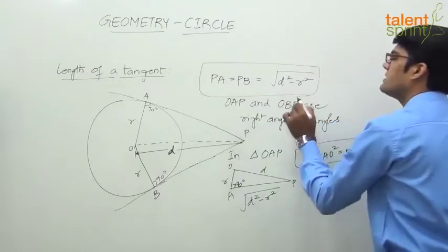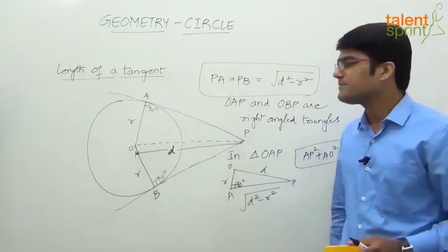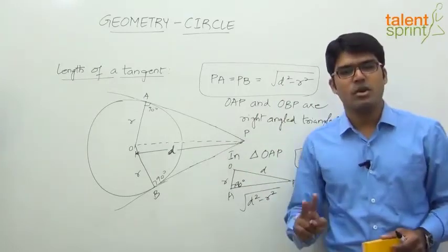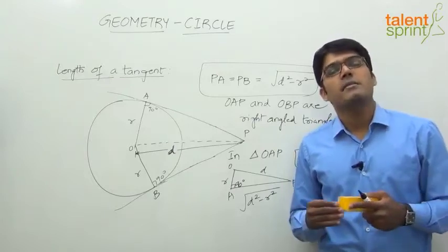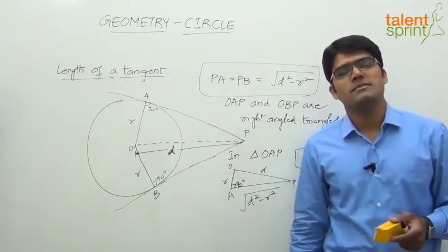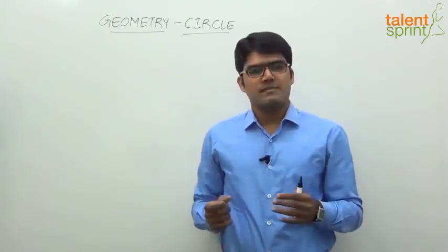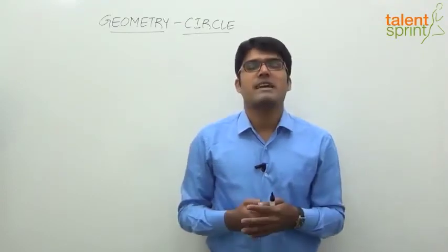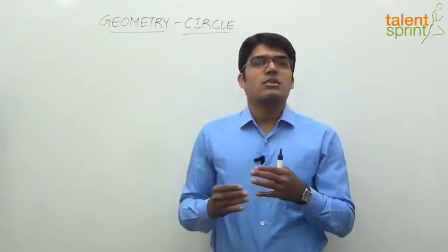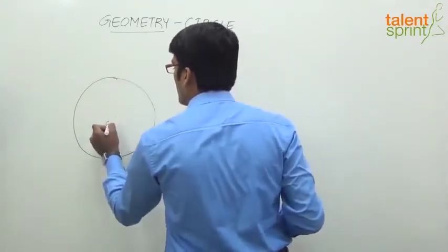This is how we can always measure the length of a tangent when you know the distance from the center to the external point. So two important properties discussed so far: one, the angle made by the radius at the point of contact with the tangent is 90 degrees; second, the length of the tangent. Let us now quickly discuss a few more properties — direct common tangents, transverse tangents — and then look at examples.